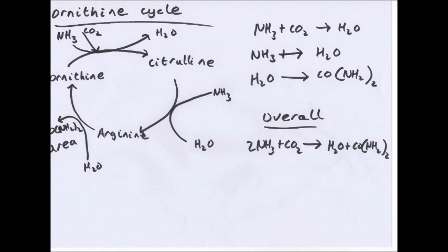I want to clarify — these are not exact chemical reactions; I'm using them to show the overall equation. So yes, NH3 plus CO2 does not directly form water, but it shows two molecules of NH3 on the left-hand side and one molecule of CO2. On the right-hand side you get two molecules of water and one molecule of urea. Two of those waters cancel out because they are reused, so you only have one H2O left and one molecule of urea overall: 2NH3 + CO2 → H2O + urea.